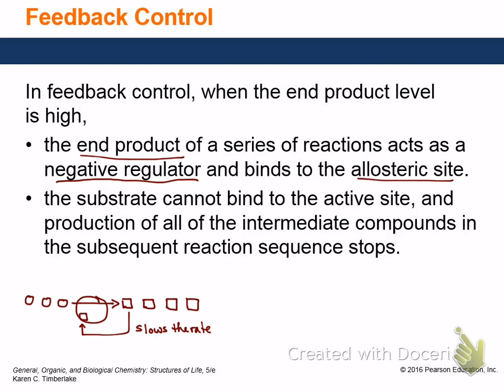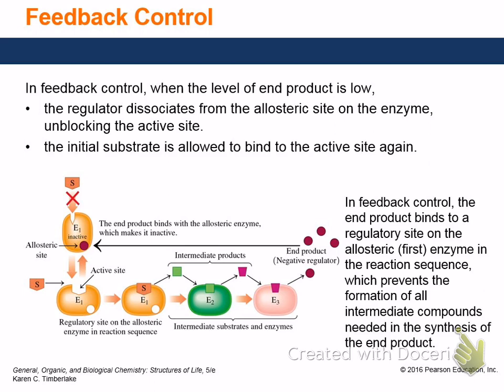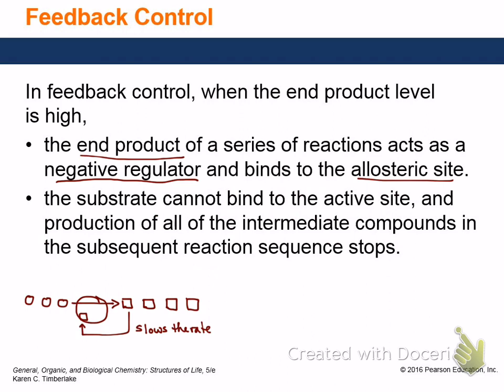So in negative feedback, you produce a regulator from one of the products — it could be two or three enzymes downstream — that goes back to the initial enzyme and shuts it off. That keeps the substrate from binding and slows down the reaction. Also, if the product gets used up, the allosteric control is no longer there and more product gets produced. So it regulates the rate in both directions.